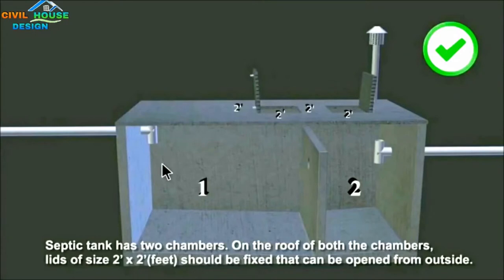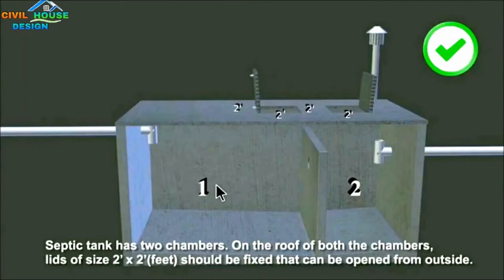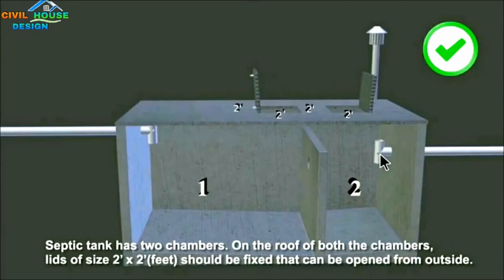The walls are plastered using impermeable material so that the wastewater will exit only through the outlet. The chamber is 2 feet by 2 feet.